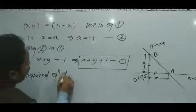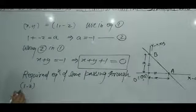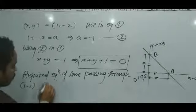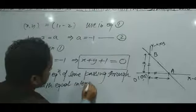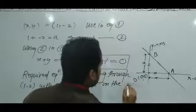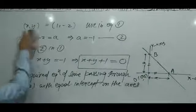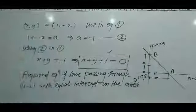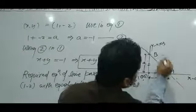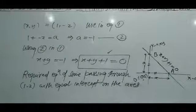The required equation of line passing through 1 comma minus 2 with equal intercepts on the axis is x plus y plus 1 equal to 0. This is the answer — the line which cuts off equal intercepts on the axes and passes through the point 1 comma minus 2.